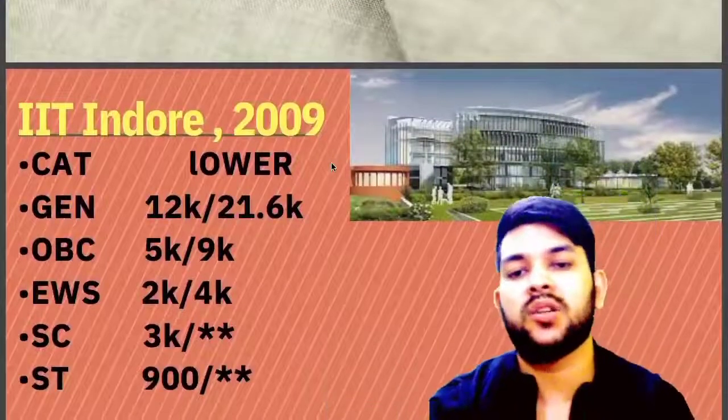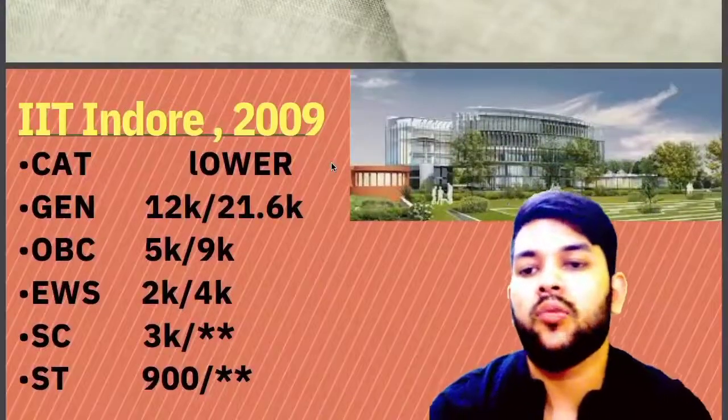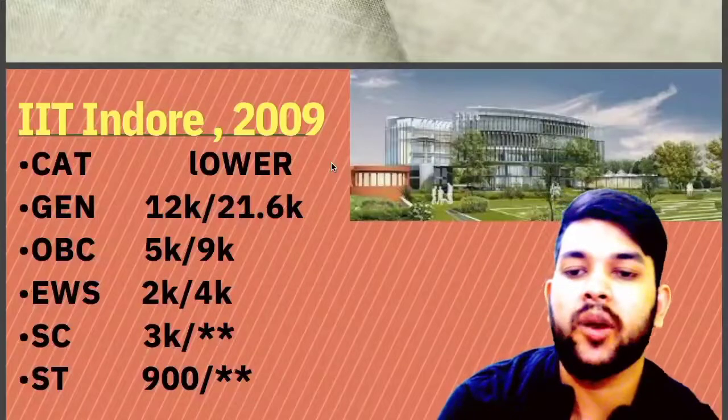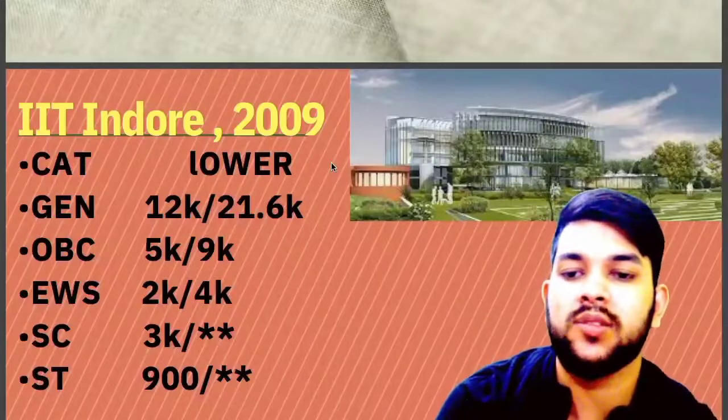Let's talk about IIT Indore. Here is the information: General – 12,000; OBC – 5,000; PWS – 2,000; SC – 3,000; ST – 900 rank.